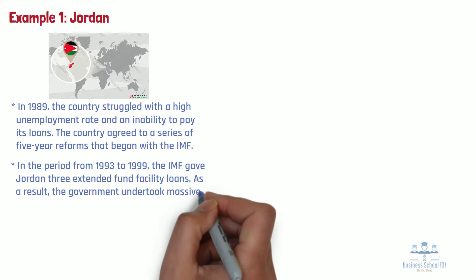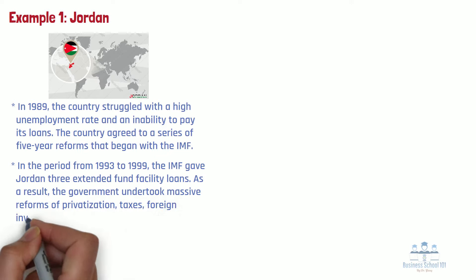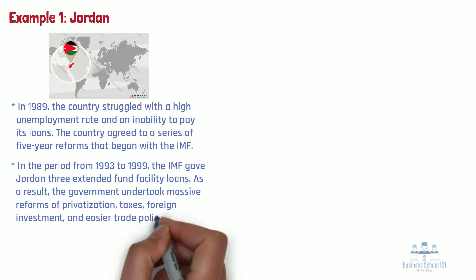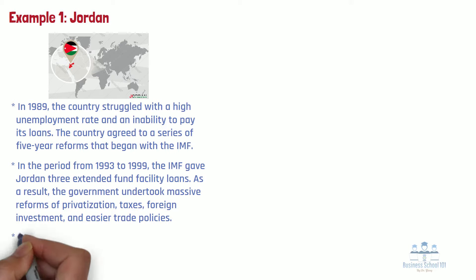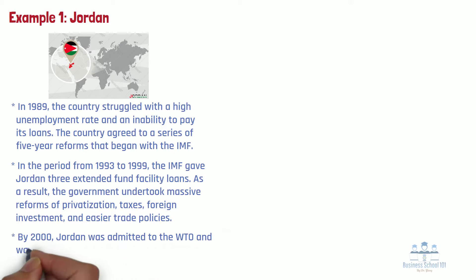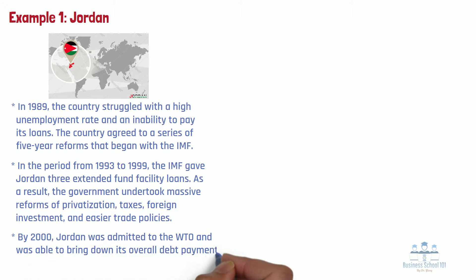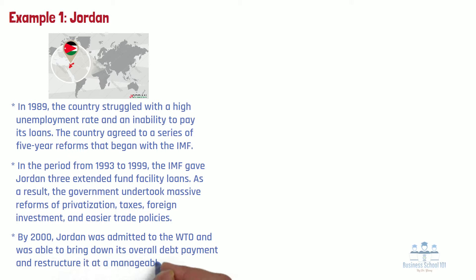As a result, the government undertook massive reforms of privatization, taxes, foreign investment, and easier trade policies. By 2000, the country was admitted to the World Trade Organization and one year later signed a free trade accord with the United States. Jordan was also able to bring down its overall debt payment and restructure it at a manageable level. Jordan is an example of how the IMF can foster strong and stable economies that are productive members of the global economy.